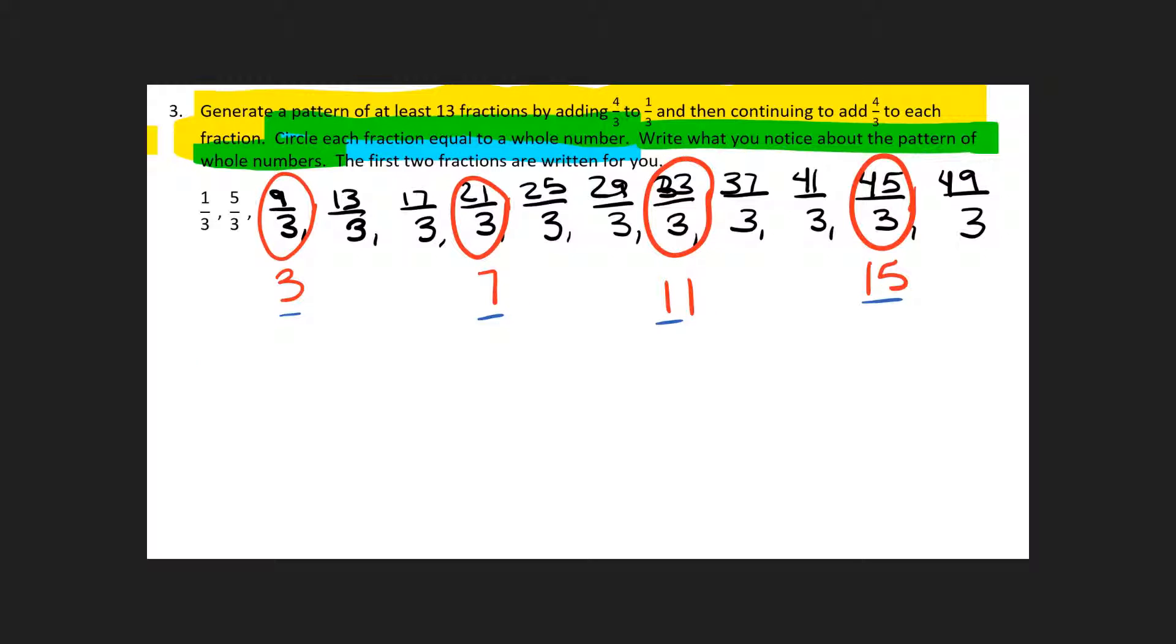So one pattern is the value of the whole numbers increase by 4. Another pattern we see is that the whole numbers 3, 7, 11, and 15 are all odd.